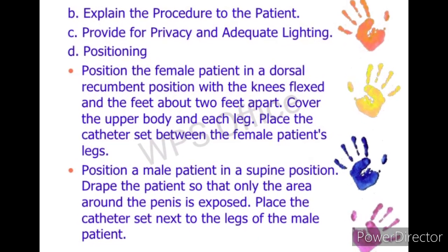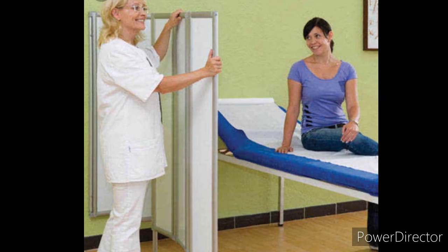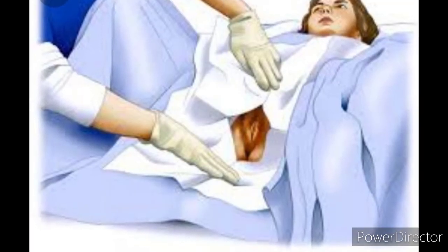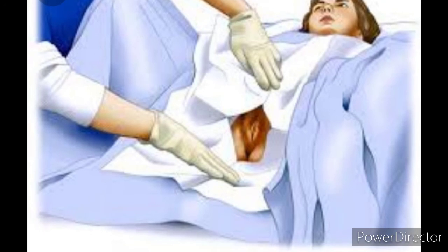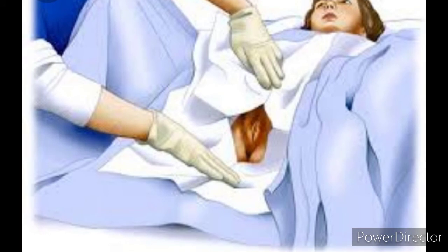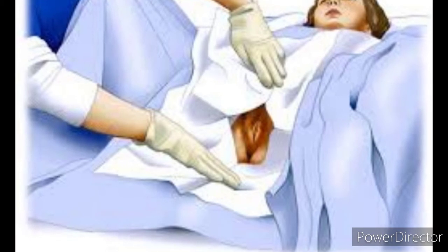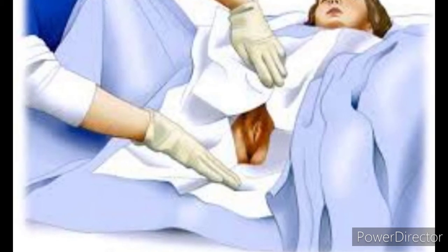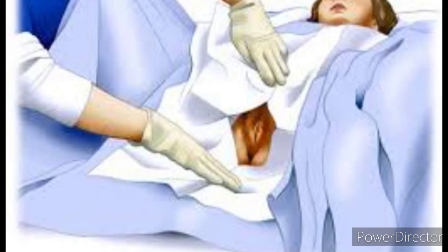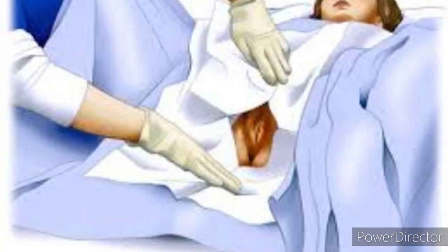Explain the procedure to the patient and provide privacy with adequate lighting. For positioning, the female patient should be placed in the dorsal recumbent position with knees flexed and feet two feet apart. The patient should lie flat in the bed. Cover the upper body and legs, then place the catheter set between the female patient's legs.